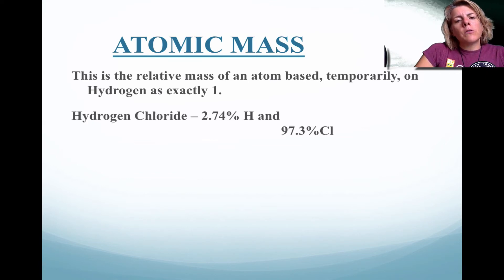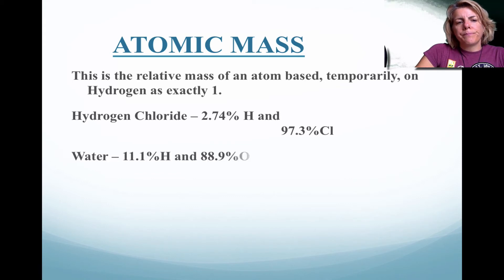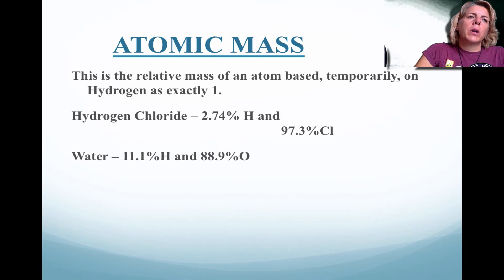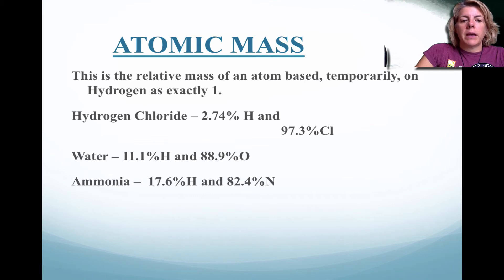If you look at hydrogen chloride and determine the ratio of the two elements, 2.74% of the mass is hydrogen and the remaining is chlorine. Water — we know that 11.1% by mass is hydrogen and the rest is oxygen. And ammonia — hydrogen has a 17.6% mass and the rest is nitrogen.